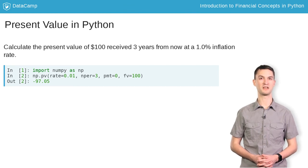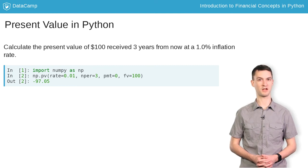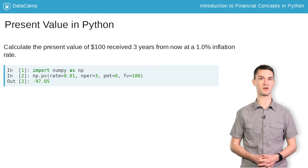This function returns a negative number when discounting from a future value to a present value, which simply means that you will have to spend cash in these investment conditions in order to receive a future positive value of $100 after 3 years.